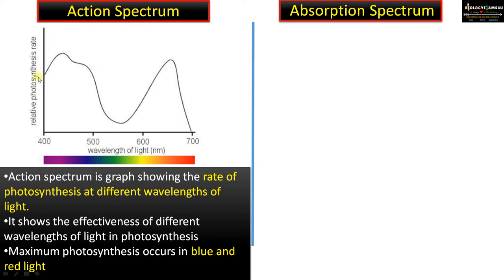It's a graph showing the rate of photosynthesis at different wavelengths of light. On the y-axis is the rate of photosynthesis, and on the x-axis is the wavelength of light. You can see the first peak in the blue region and a second peak in the red region, indicating that maximum photosynthesis occurs in blue and red light.